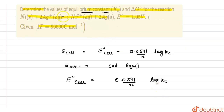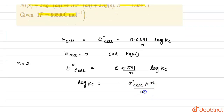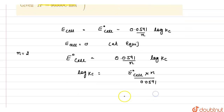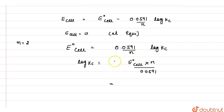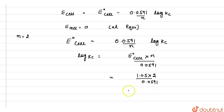The change in the number of electrons here is 2, and we have to find out the value of log Kc. Thus, log Kc is equals to E°_cell into n upon 0.0591. The value of E°_cell given to us is 1.05, so: 1.05 into 2 upon 0.0591. When we solve this, it comes out to be 35.59. So log Kc = 35.59.